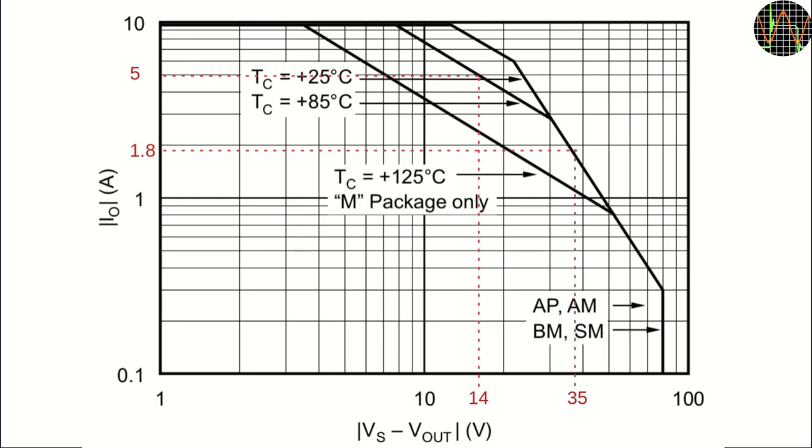But as this diagram also from the OPA541 datasheet shows, things are a bit tricky. This is the so-called safe operating area. It shows what output current IO can safely handle depending on the difference between the supply voltage Vs and the output voltage Vout. To understand this problem, you should imagine the amplifier being essentially a linear voltage regulator in a power supply, because it is the same problem.